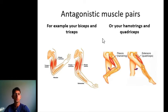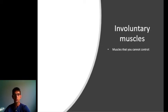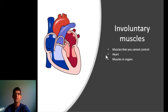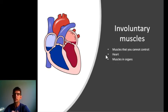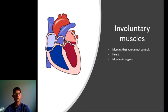There are also involuntary muscles. Involuntary muscles are muscles that you cannot control. For example, your heart — you don't have to think about your heart pumping blood around your body. It will do it automatically.